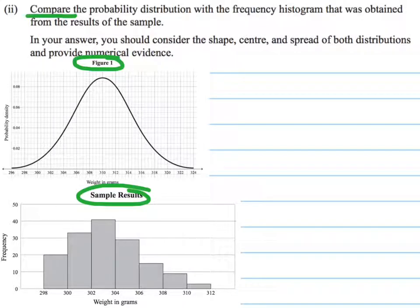And they're telling us to think about shape, centre and spread, and as well as providing numerical evidence there. So I want to just take some quick notes about each of these distributions before I go ahead and do some comparisons of them.